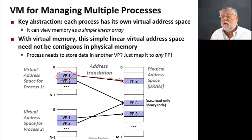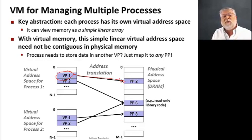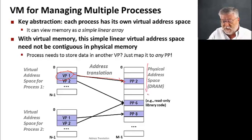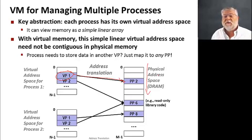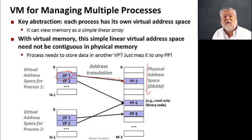So we don't have to worry about virtual page one being just before virtual page two, then virtual page three, and so on. As we think about it in the virtual address space, these can be scattered throughout physical memory and can be in any order. This helps us fit things in as needed without having to move things around so they're always in the exact same order.